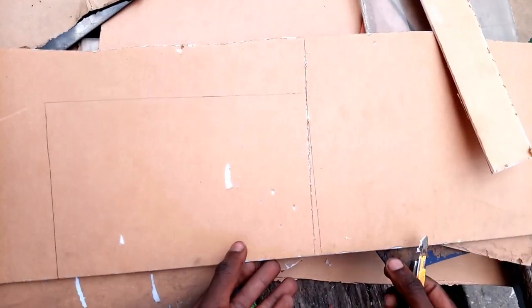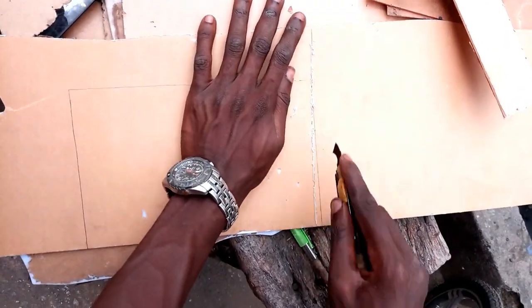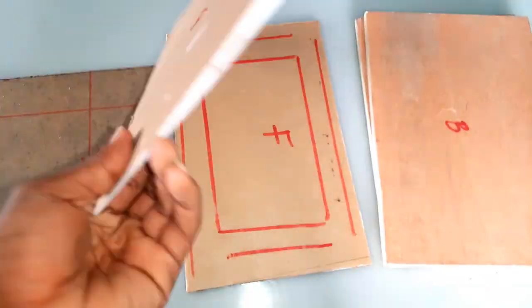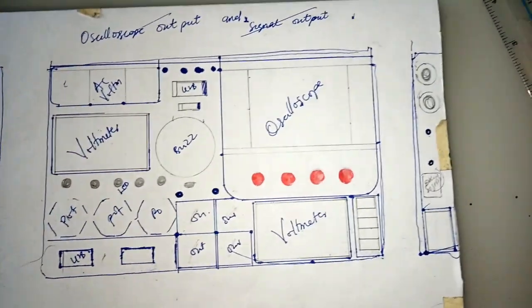I went to a plastic vendor and with the measurement I gave him, he cut a plastic that I needed for the standard casing. Having the whole setup, I began to measure the dimension of different components that will be mounted on the case. Completing the measurement, I started drilling out the marked area.